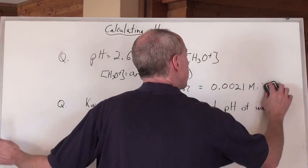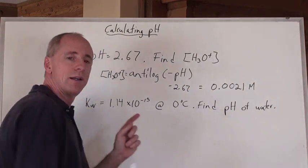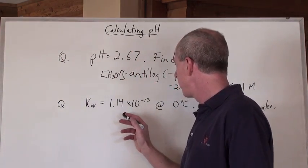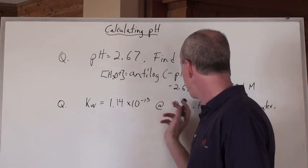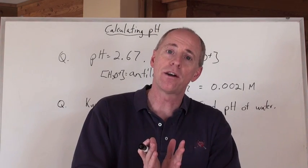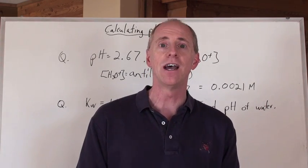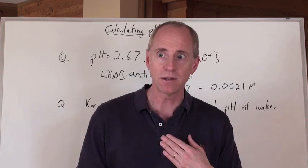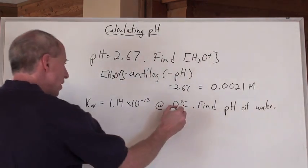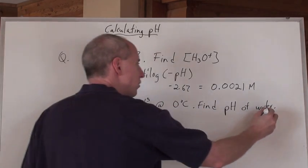Now, what about this one? This is kind of weird, look at this. The kW of water is 1.14 times 10 to the negative 15 at zero degrees Celsius. I told you that the k for water at 1 times 10 to the negative 14 is at 25 degrees Celsius. The k value is temperature dependent, it always is. So here's the thing, at zero degrees Celsius, if water's kW is this, what's the pH of water?